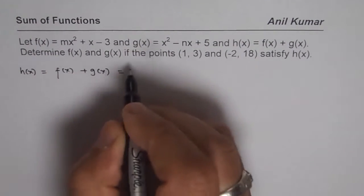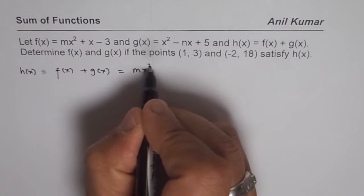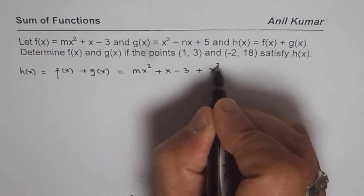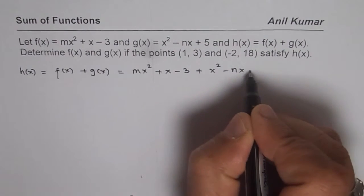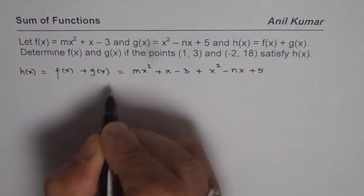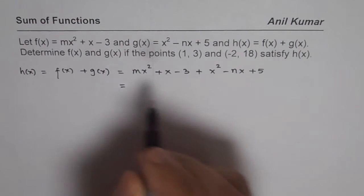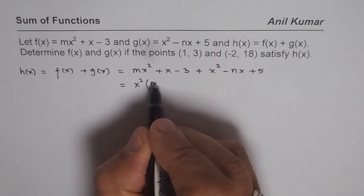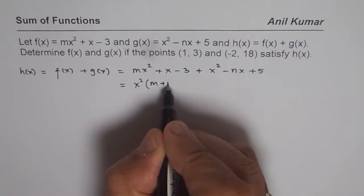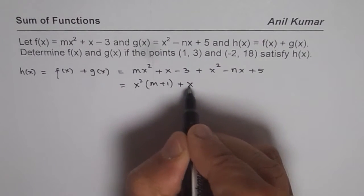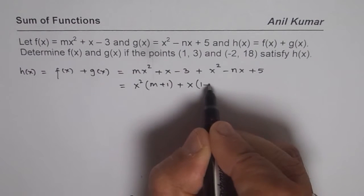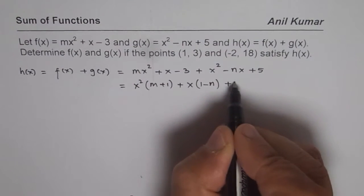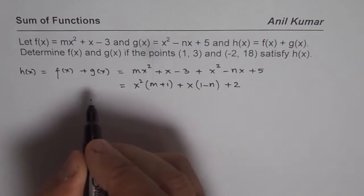So h of x gives us mx squared plus x minus 3, plus x squared minus nx plus 5. Taking x squared as common, we get x squared times (m plus 1), for x we have (1 minus n), and the constants give minus 3 plus 5, which is plus 2. So that is h of x.